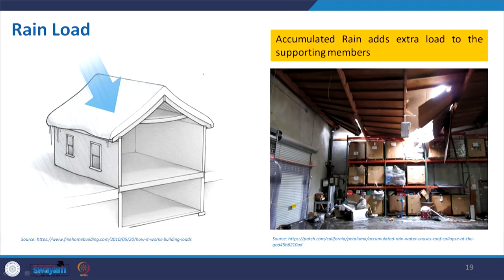Rain load: accumulated rain adds extra load to the supporting structure and may cause collapse. Here you can see a false ceiling damaged due to rain, with water accumulation — that should also be taken into consideration.